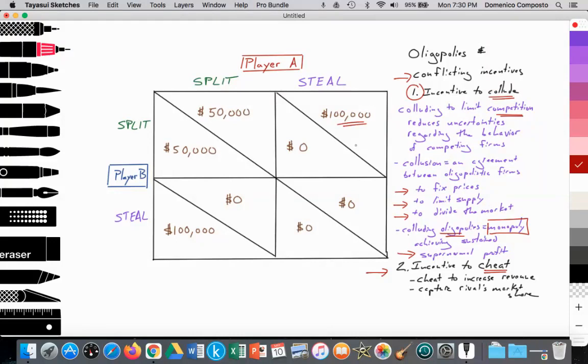By cheating, firms are able to grab their rival's market share, which can lead to increased revenue and increased profit, which we see in this particular game. Player A steals, they get the full $100,000 and player B gets nothing. And vice versa. If player B decides to steal or cheat while player A maintains the split, then player B gets the $100,000.